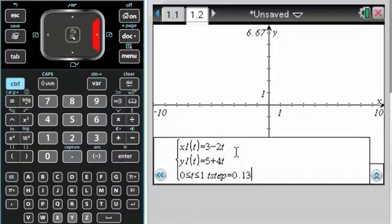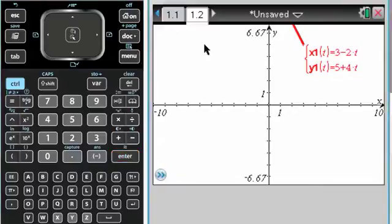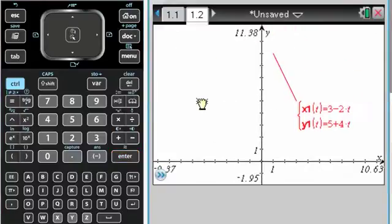T step is kind of important. The smaller it is, the longer it usually takes to graph. This did not take any time at all.